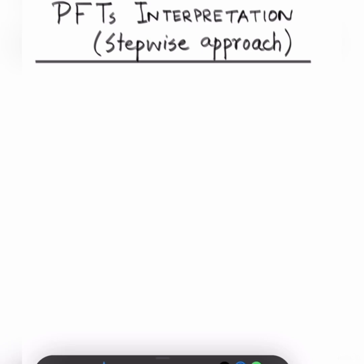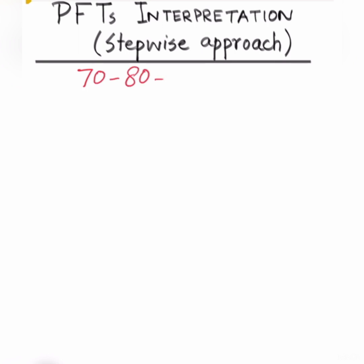Today we are going to learn about pulmonary function test interpretation — how to approach it stepwise, how to differentiate between obstructive and restrictive lung diseases, and how to further delineate which one is which. An easy way to remember this is via the 70, 80, and 90 rule, so you will never forget it.